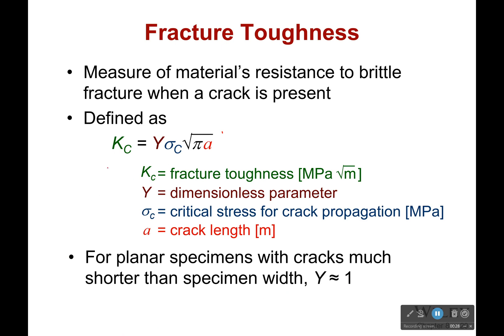We're bringing back that critical stress for crack propagation — we talked about that last time. We have our crack length A, and we have the dimensionless parameter. What this is saying is that this is how resistant a material is to fracture when that crack is present.